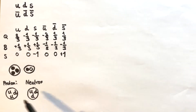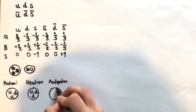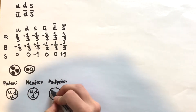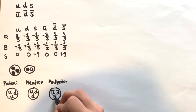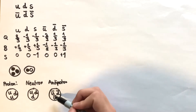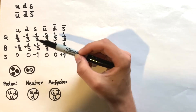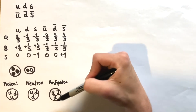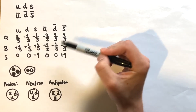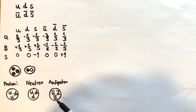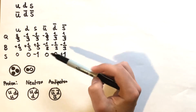Now let's do the anti-proton. The anti-proton is very similar to the proton except all quarks become antiquarks: two anti-up quarks and an anti-down. In terms of charge: two lots of −2/3 gives −4/3, and the anti-down has a charge of +1/3, giving −4/3 + 1/3 = −1, which is of course the charge of the anti-proton.